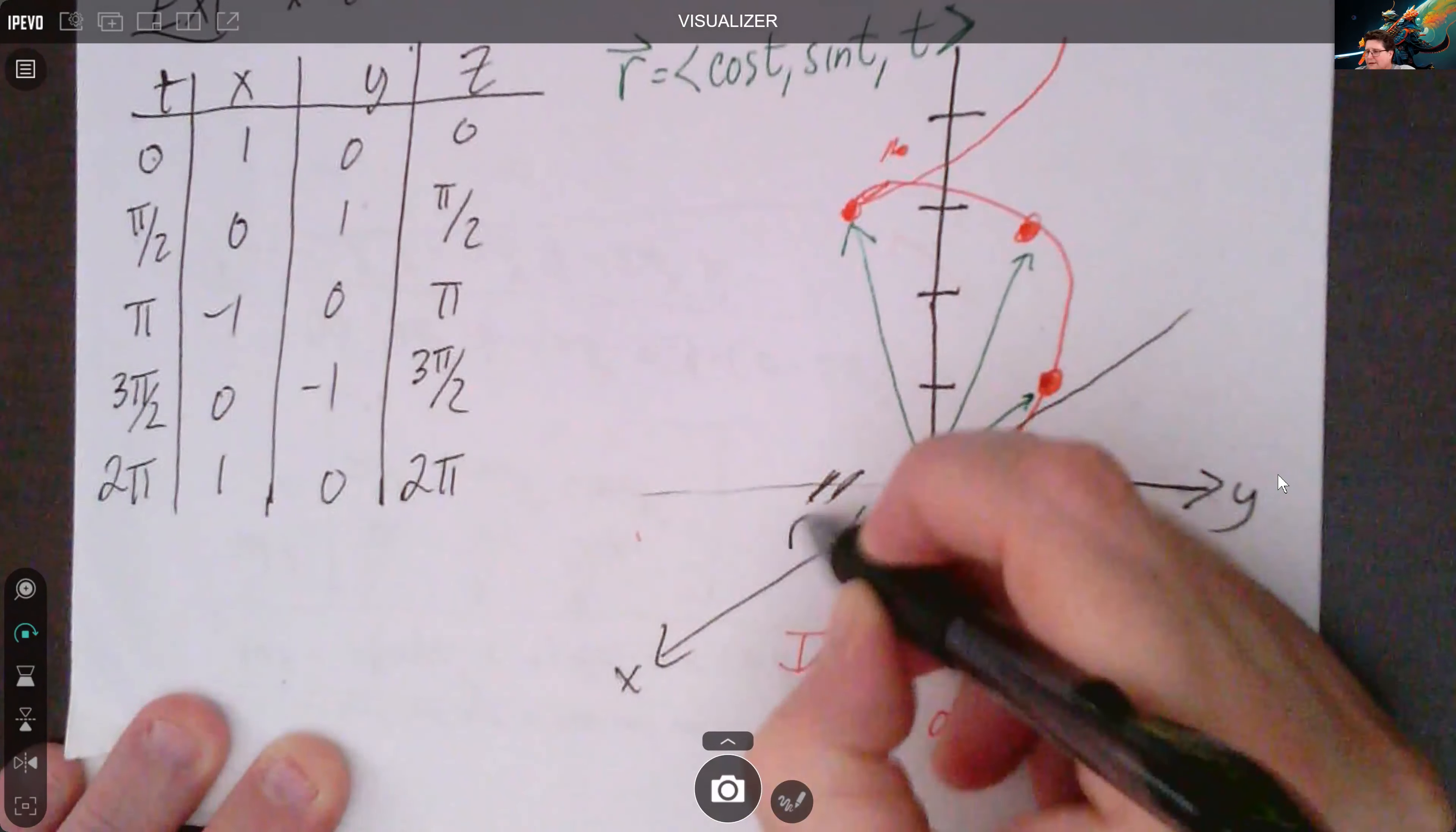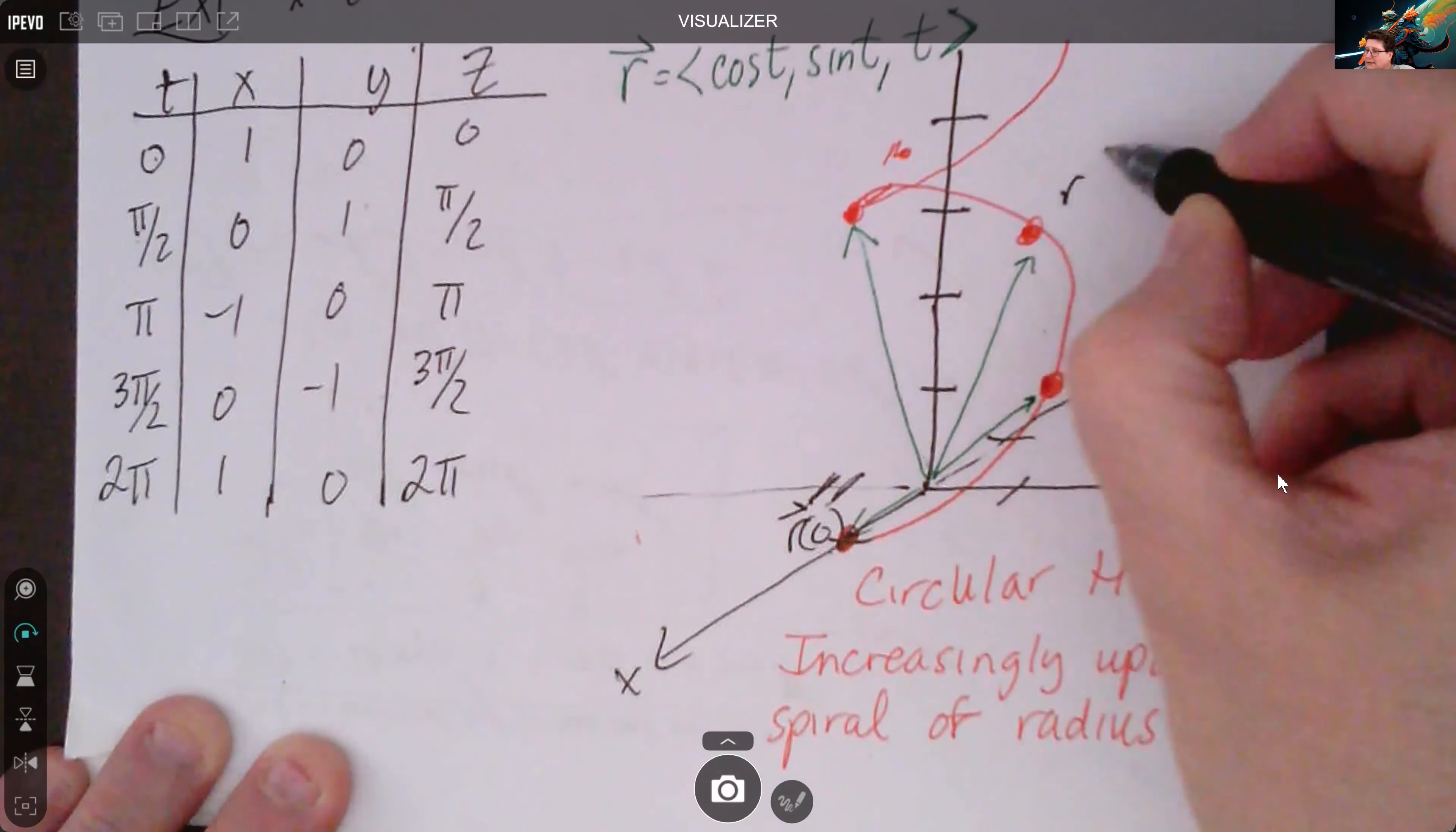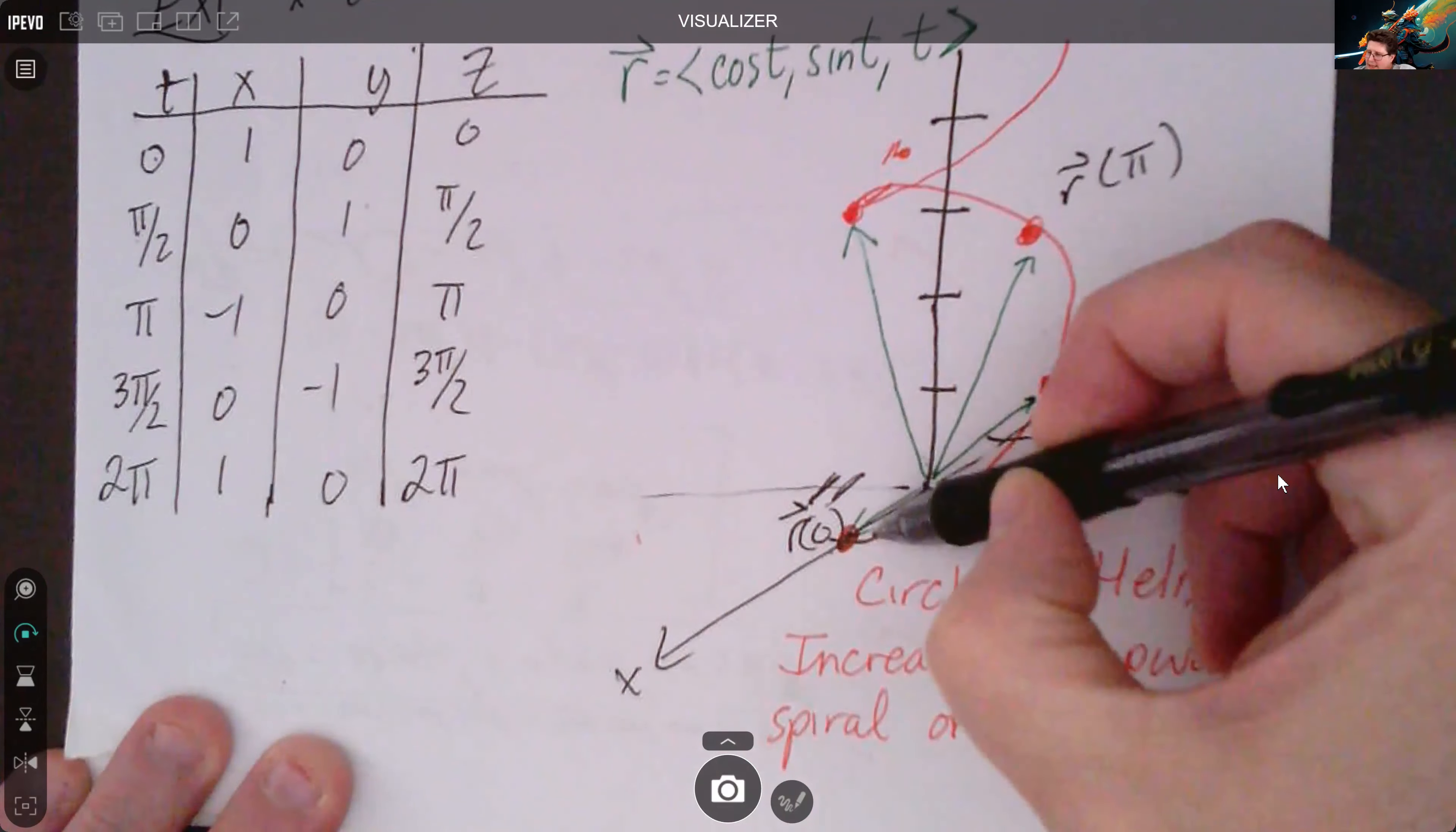Let me bring that up on the screen a little bit better. This is r of zero right there. Here we've got r of pi over 2. Here we've got r of pi.